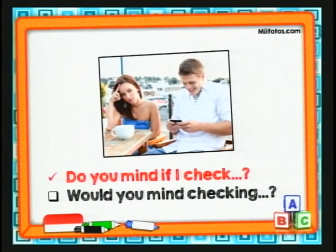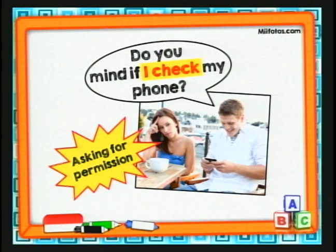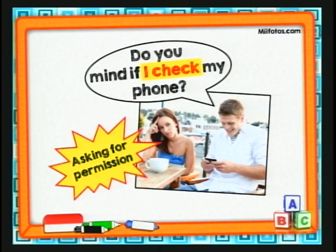Obviamente dice: te molesta si reviso mi celular. Entonces quedaría la pregunta formulada de esta manera. Do you mind if I check my phone? Obviamente aquí le está pidiendo permiso. El joven que está con la novia le dice: te incomoda si yo reviso mi celular. En la foto sí le molesta — están en la cena romántica y el chico está con el celular. Estamos aquí pidiendo permiso — we're asking for permission.